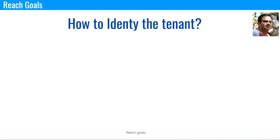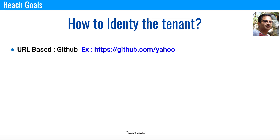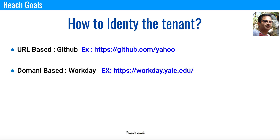Those are the real reasons we need to figure out who the tenant is. Now let's get to the original question: how to identify the tenant. There are multiple ways; I'll talk about three important ones used in popular applications. The first is URL-based tenant identification. On GitHub, for example, you see something like https://github.com/yahoo — where 'yahoo' is the tenant. Based on the URL, you can identify the tenant, generate a unique ID, store it in the database, and use it to differentiate between tenants.